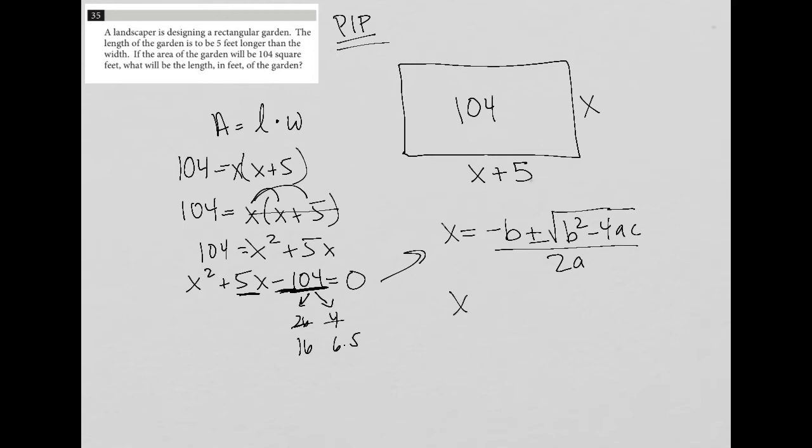and what I have here is X is equal to negative five, because B is five, plus or minus the square root of B squared, which is 25, minus 4 times A, which is just 1, times C, which is negative 104, all over 2A, again, A being 1. So when I simplify all of that, let me just make some more space for myself here.